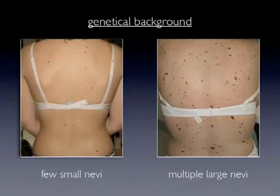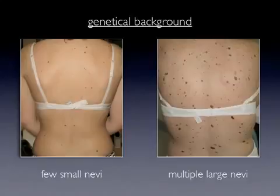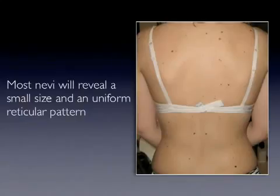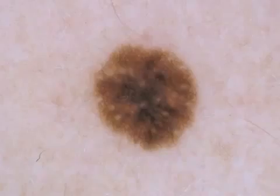Also, the genetic background has an impact on the nevus pattern, and basically we can differentiate between two scenarios: persons with few small nevi, and persons with multiple large nevi. Most nevi in persons with few small nevi will reveal a uniform reticular pattern, like shown in this example.